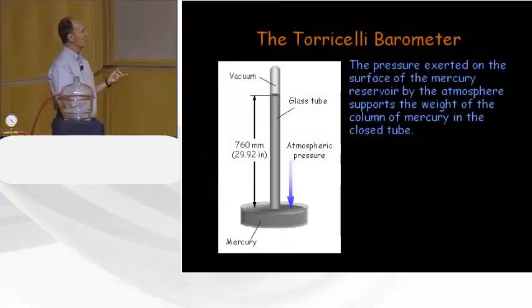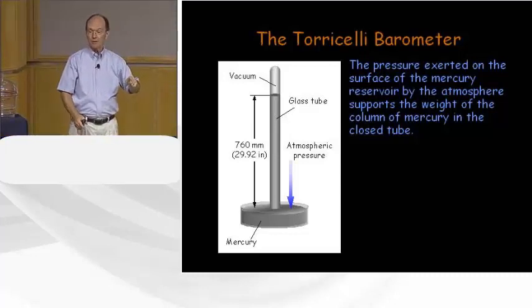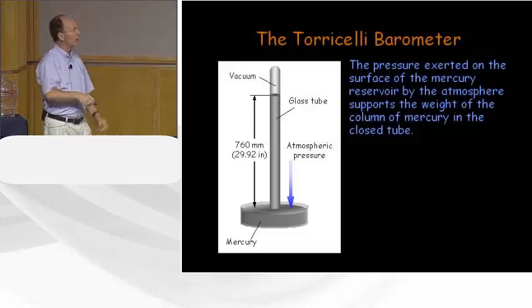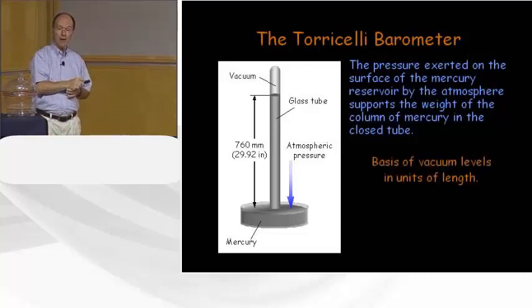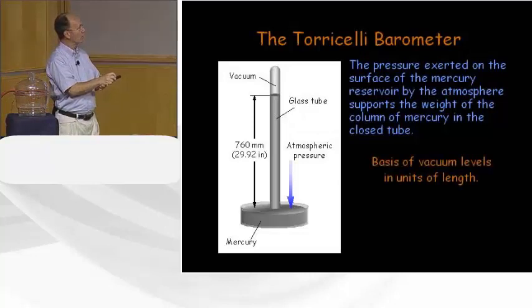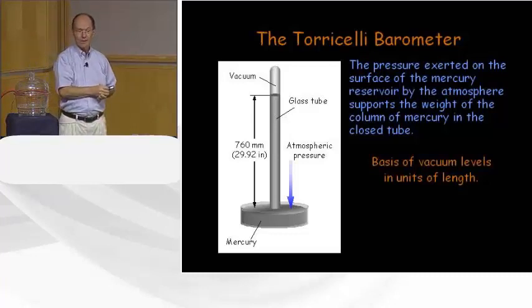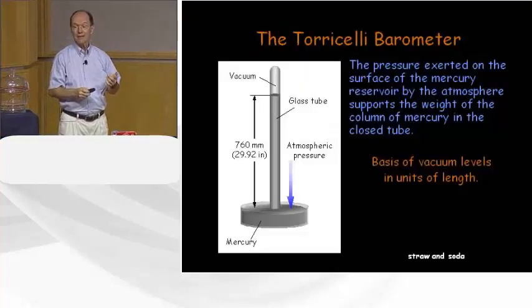Here's a Torricelli barometer: you take a glass tube longer than 760 millimeters, fill it with mercury, put your thumb over it, turn it upside down so the open end is underneath the mercury surface, and take your thumb away. The weight of the atmosphere presses down on the pool of mercury, and atmospheric pressure supports exactly 760 millimeters of mercury. The weight of that mercury is exactly 14.7 pounds per square inch of cross section.